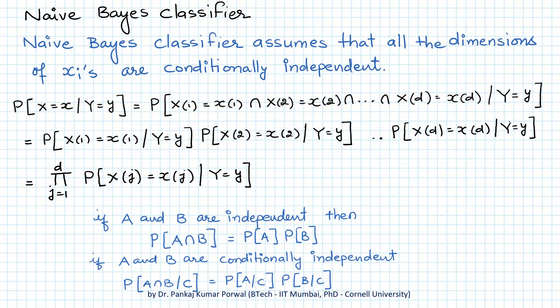One simplifying assumption is to assume that all dimensions of X are conditionally independent. The classifier that assumes conditional independence of the dimensions is called the naive Bayes classifier — a simple version of the Bayes classifier. If two events A and B are conditionally independent, then the conditional probability of their intersection equals the product of their conditional probabilities.